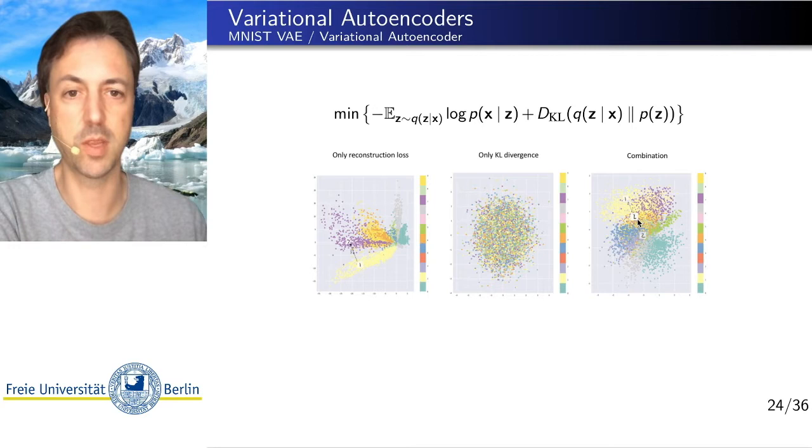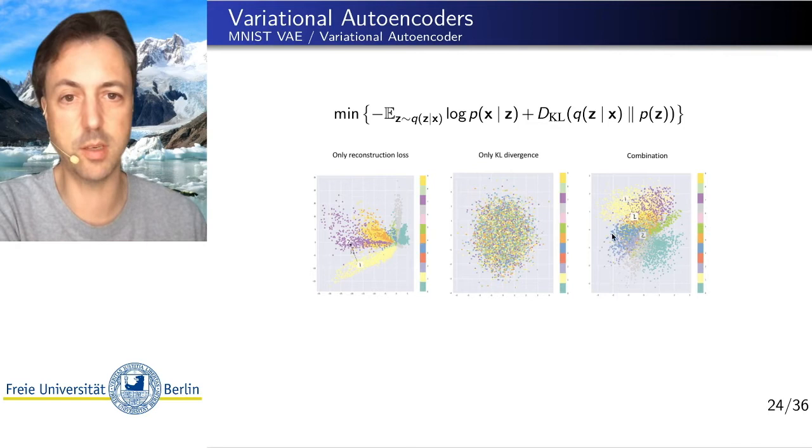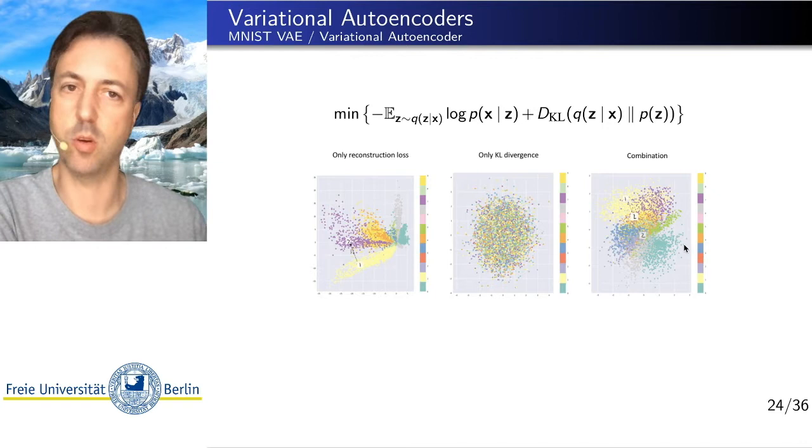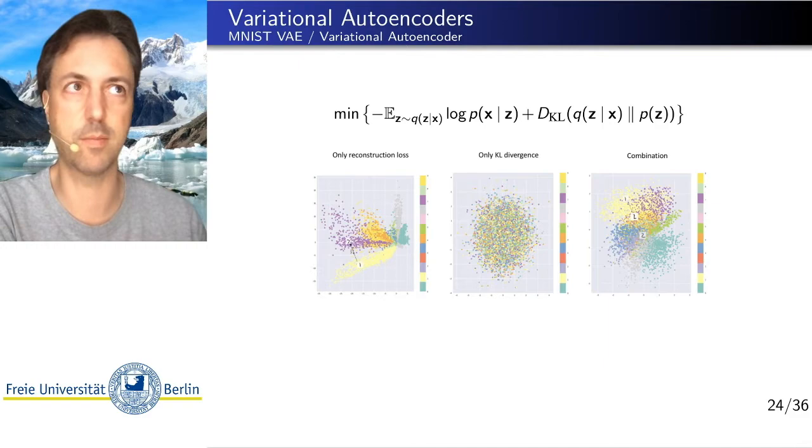And we still get this clustering effect. We get a compact representation of points here. So the points concentrate around 0. So whenever we want to interpolate, we can move within parts of latent space that we know, that we have trained for. And we can get a meaningful decoding for those. So this is why both terms, reconstruction loss and KL divergence, are important for success here.